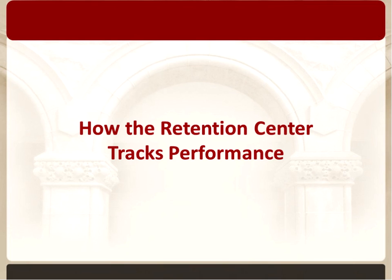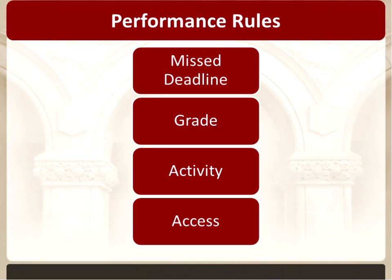You may have noticed four different factors that Blackboard tracks when looking at student risk. They're not necessarily the most obvious rules, so let me explain what those four rules are. The four categories are missed deadlines, grade, activity, and access.